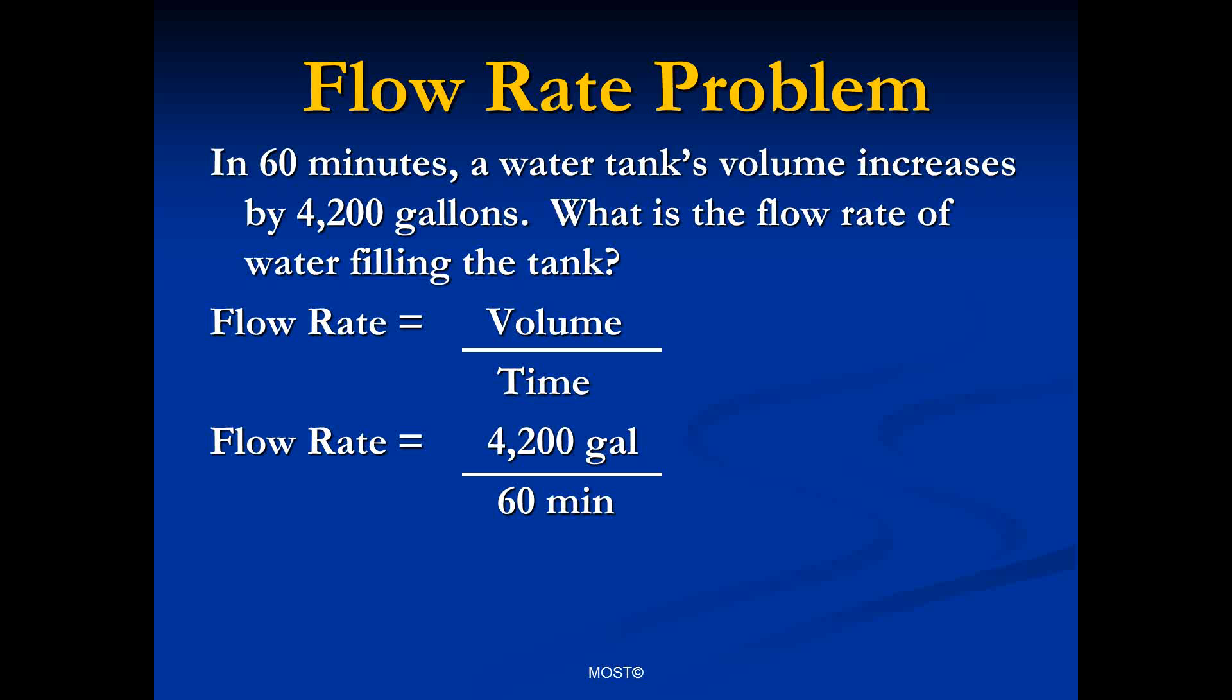We'll see that our answer will be expressed in gallons per minute, the units in our calculation. And then it's calculator time, 4,200 divided by 60 is 70 gallons per minute.